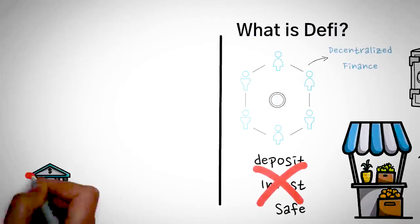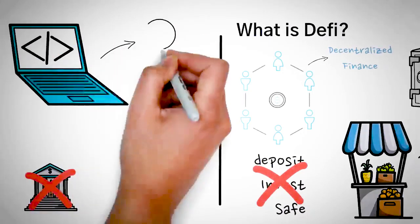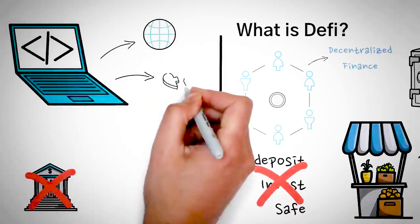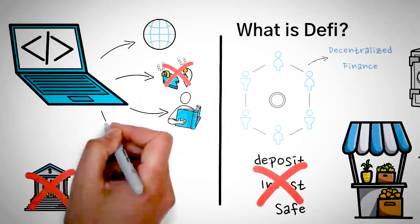Decentralized finance, where there are no banks. Instead, there are pieces of code that run and act as a bank. They're open to anyone, they don't require you to trust them because they're literally a piece of code running a program. If you wanted to, you could read through it and verify that it's not going to scam you.